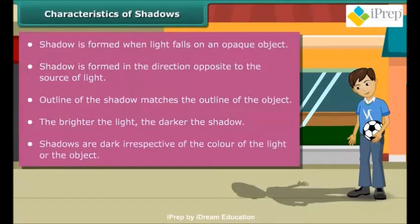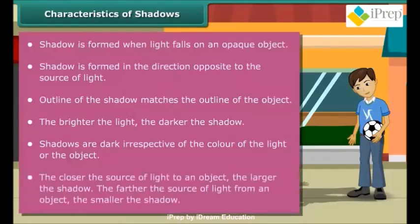Shadows are dark irrespective of the color of the light or the object. The closer the source of light to an object, the larger the shadow. The farther the source of light from an object, the smaller the shadow.